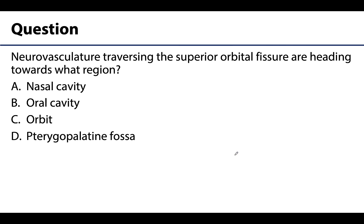Let's assess our knowledge with a question: neurovasculature traversing the superior orbital fissure is heading towards which region? A, nasal cavity; B, oral cavity; C, orbit; D, pterygopalatine fossa. The correct answer is C — the orbit. Neurovasculature traversing the superior orbital fissure, as well as the optic canals, are communicating with the orbit.